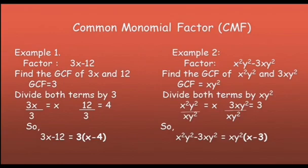3x over 3, we have x because we cancel 3. And then 12 divided by 3, we have 4. Therefore, the factored form of 3x minus 12 is 3 times the quantity x minus 4.